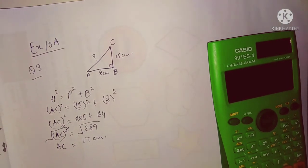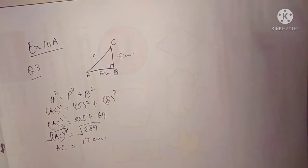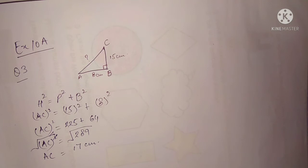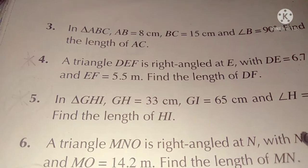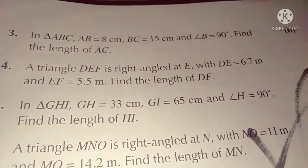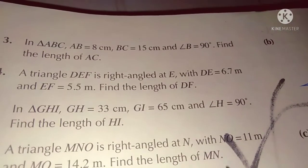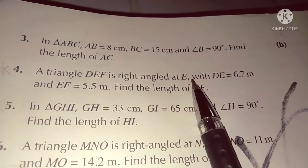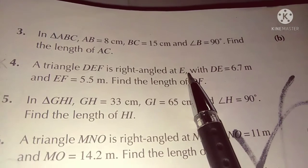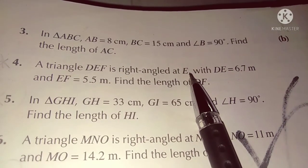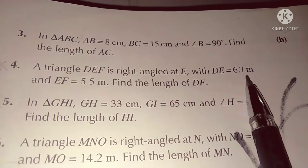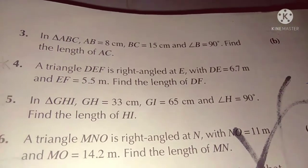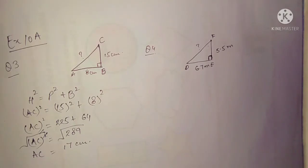I hope that's clear. Now let's move forward to question number four. Question number four: triangle DEF is a right angle triangle at E. DE is equal to 6.7 meters and EF is equal to 5.5 meters. Find the length of DF.